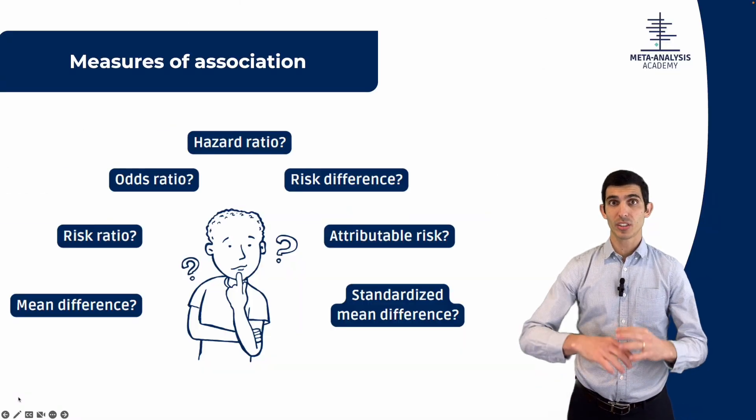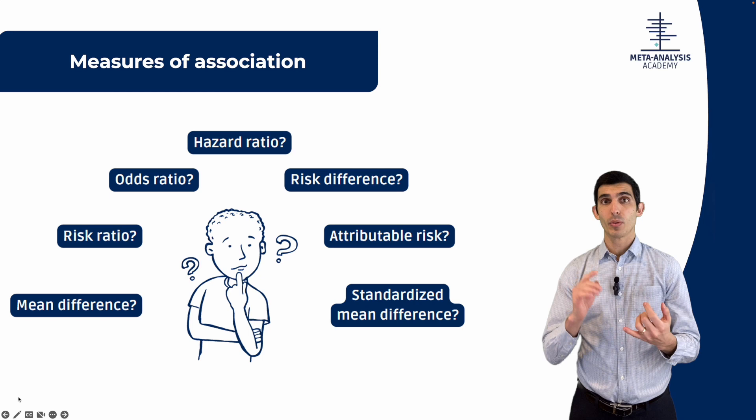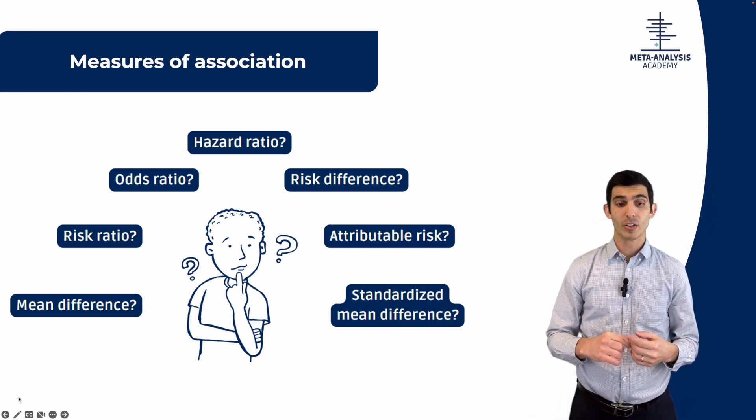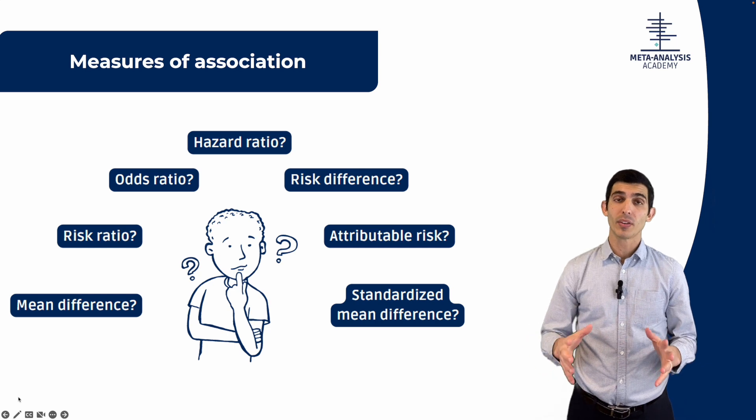Whenever someone does a clinical trial, a cohort study, or an epidemiological study — basically a clinical question being answered in the format of a research study — there will be a measure of association that's generally trying to quantify the relationship between exposure or intervention and the outcome. These measures of association, there are many of them: risk ratio, odds ratio, mean difference if it's a continuous outcome, and so many others.